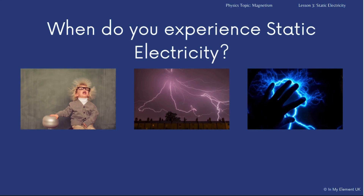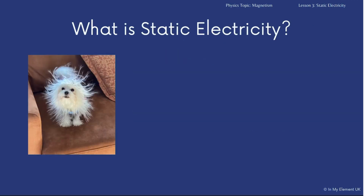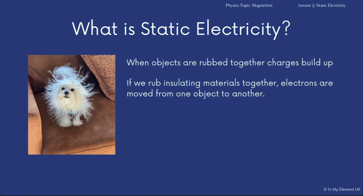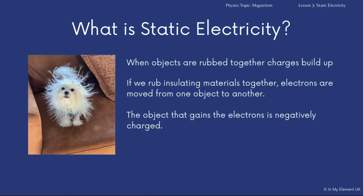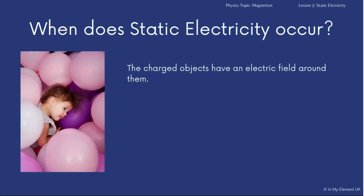Static electricity, very simply explained, is when objects are rubbed together and the charges build up. Particularly if we rub insulating materials together, electrons are moved from one object to another. The object that gains the electrons becomes negatively charged — because electrons are negative — and the object that loses the electrons becomes positively charged. Those charged objects then have an electric field around them.